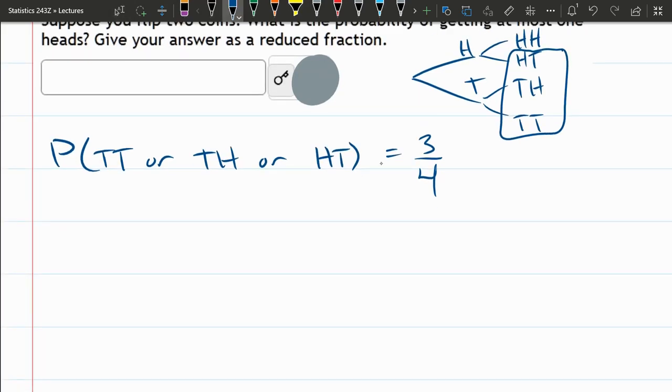I could put this in a grid like this. There's four outcomes total.